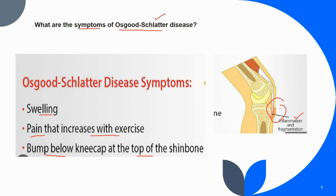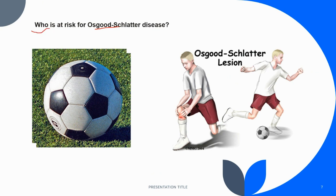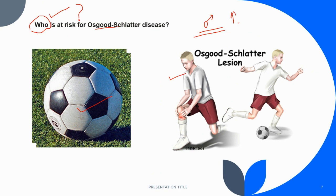Now let's talk about risk factors — who is at risk for Osgood-Schlatter disease. It most commonly occurs in children who participate in sports that involve running, jumping, and twisting, including basketball, volleyball, soccer, long-distance running, gymnastics, and figure skating. The condition tends to affect boys more than girls. It usually develops in girls between ages 11 and 12, and in boys between ages 13 and 14.